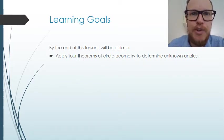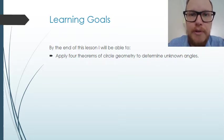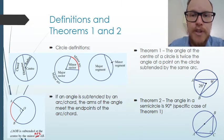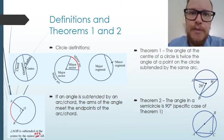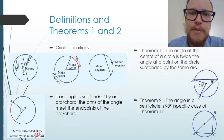Today we're going to look at circle geometry. The learning goal for today is that we're going to be applying four theorems of circle geometry to determine unknown angles. First we need to understand some definitions — the different parts of the circle. Some of them we already know will be reviewed and some of them might be new to you.